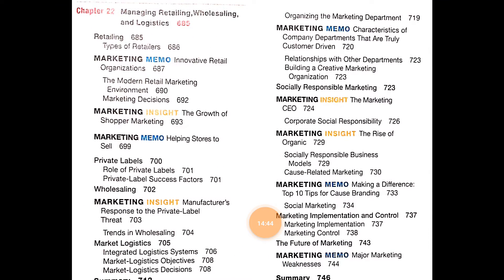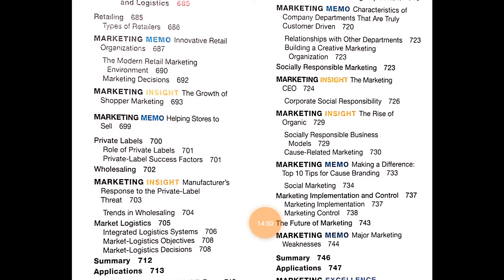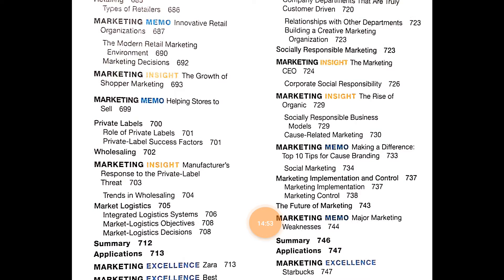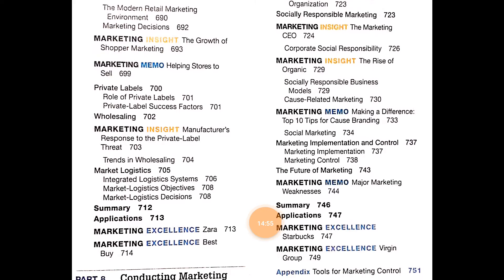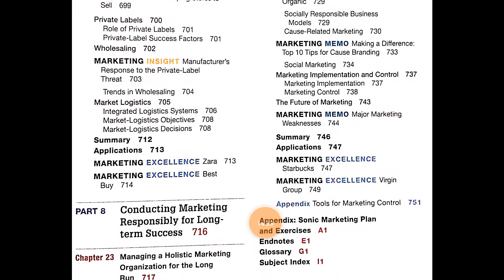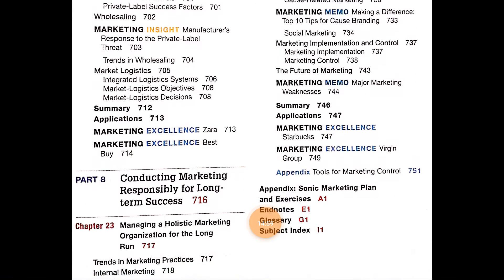Chapter 22 is Managing Retailing, Wholesaling, and Logistics, covering types of retailers, modern retail marketing decisions, growth of shopper marketing, helping stores sell private labels, rules of private labels, wholesaling, responses to the private label threat, trends in wholesaling, and market logistics.